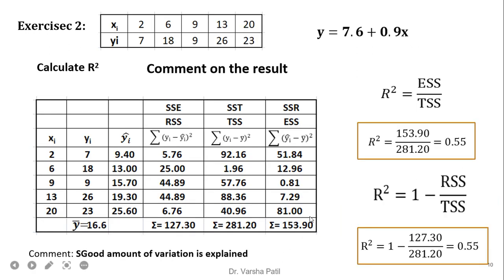Now see the next example. Again, this example is explained for simple linear regression. X is the independent variable and Y is the dependent variable. By performing the linear regression, we can easily predict the value for intercept and slope.